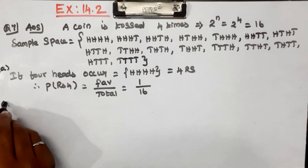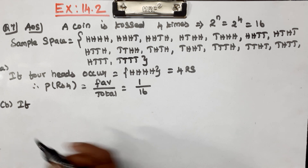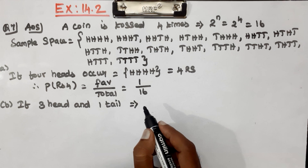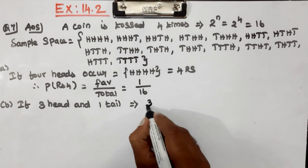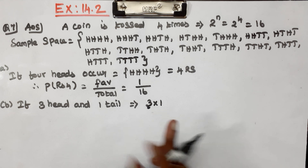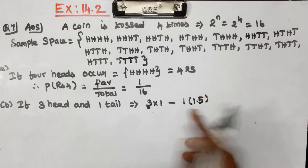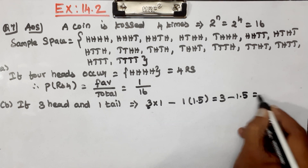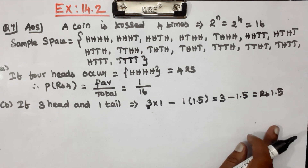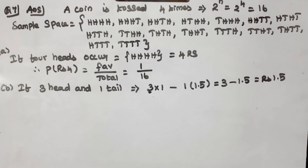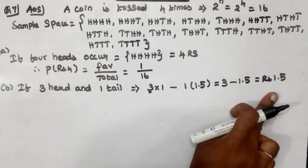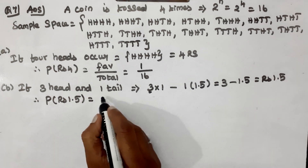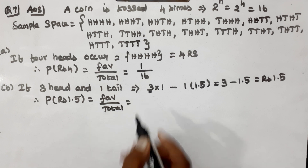Next case B: 1 tail, then 3 heads and 1 tail. 3 heads gives Rs. 3, minus 1 tail which is Rs. 1.50 loss. So 3 minus 1.5 equals Rs. 1.50. The answer is Rs. 1.50. Probability of getting Rs. 1.50 is the favorable outcomes divided by total outcomes. 3 heads and 1 tail.